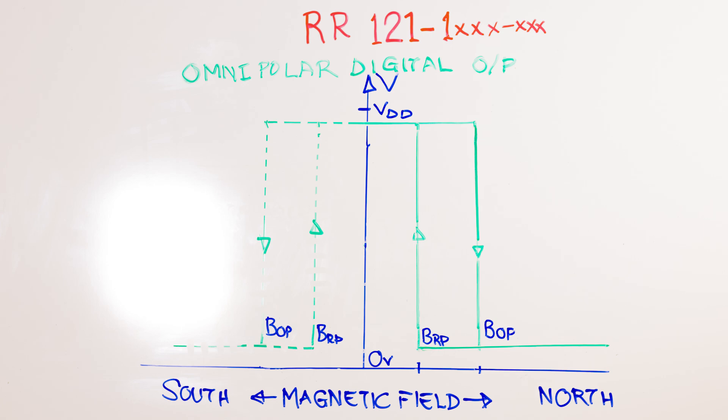For that reason, we say the sensor has omnipolar sensitivity. It responds equally well to the north pole and the south pole. It turns on at BOP regardless of whether it is the north pole or the south pole and it releases at BRP whether it is the north or the south pole.